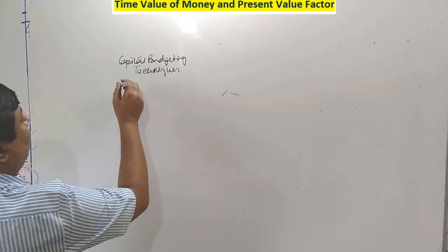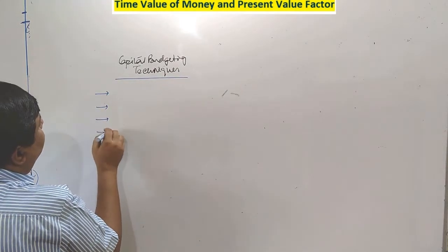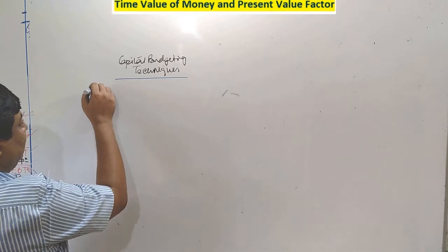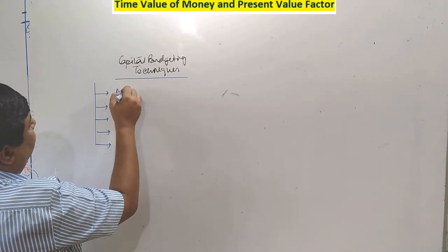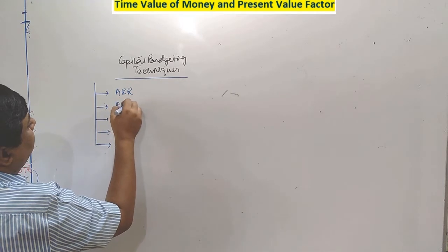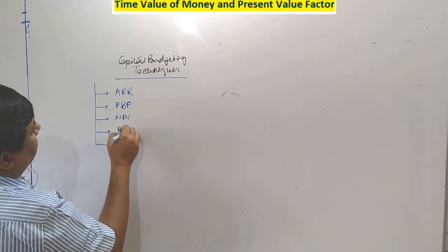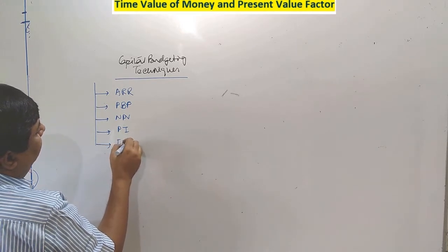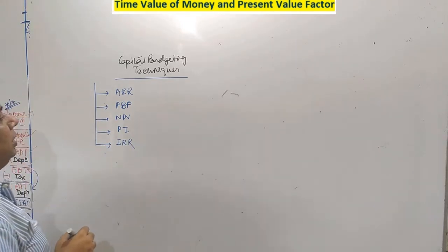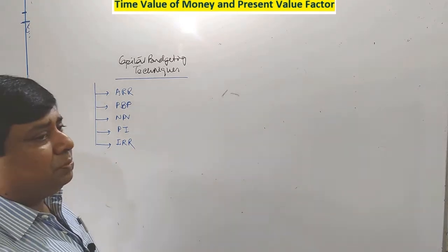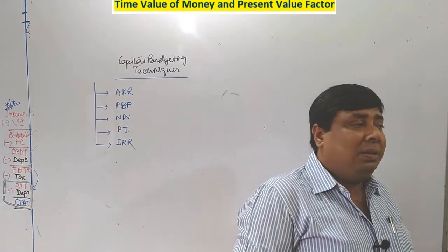In this chapter of capital budgeting techniques, as I categorized in my previous class, we can categorize the techniques in general as ARR, PPP, next one is NPV, next one is PI, and the final one is IRR. These five particular techniques are mostly used in capital budgeting.